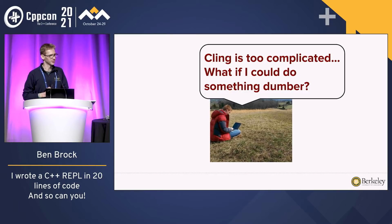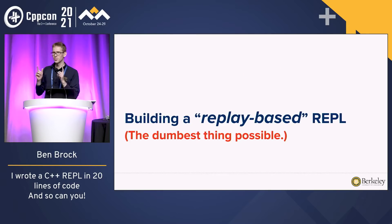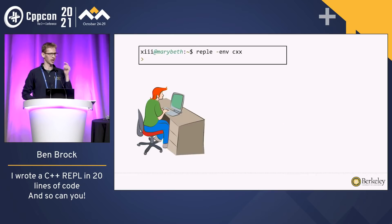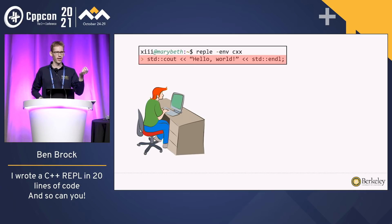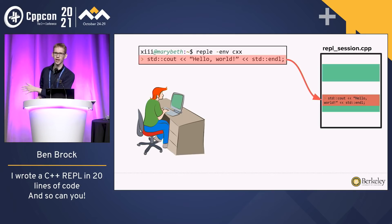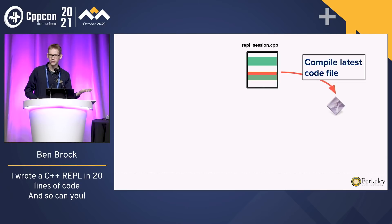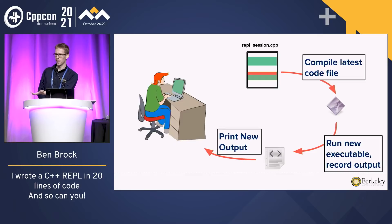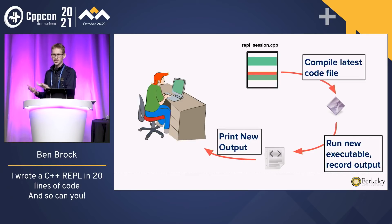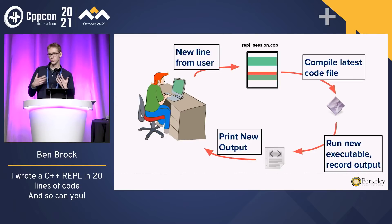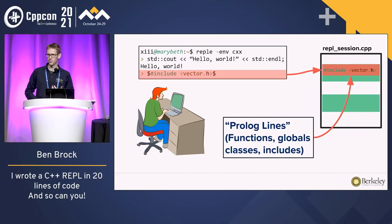So I started thinking: is there something dumber that I could do? That's when I came up with this idea of a replay-based REPL, which literally does the dumbest thing possible. You take a line of input the user puts into the REPL, paste it into a program, compile it, run the executable, then take a diff with a previous run and print out any new lines of output — and repeat.